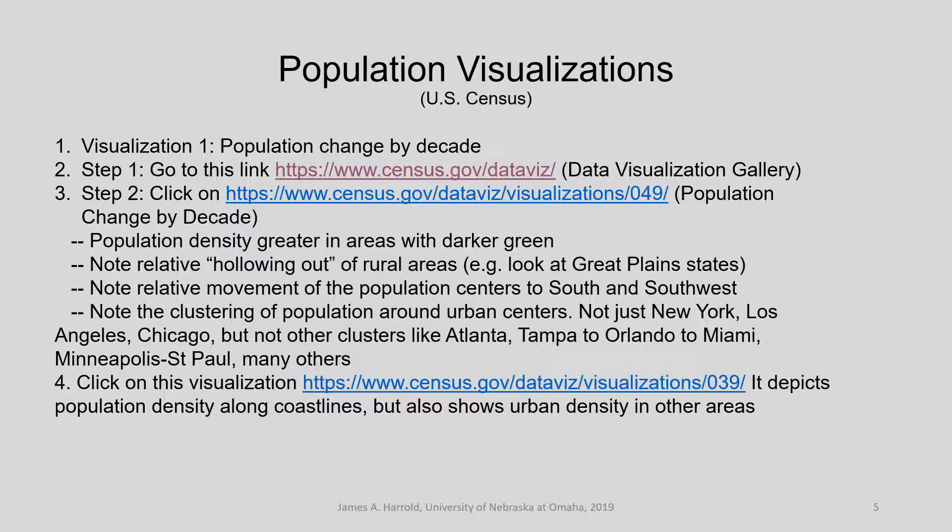You can note the relative movement of population centers to the south and southwest — places like Los Angeles, Phoenix. You can see there's a clustering of population around urban centers. It's not just places like New York, Los Angeles, and Chicago, but other clusters like Atlanta, Tampa, Orlando, Miami, Minneapolis–St. Paul, and really a lot of others.